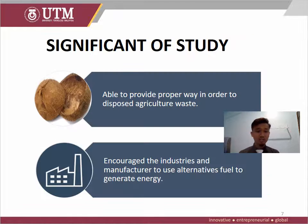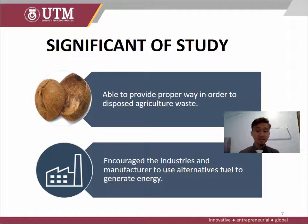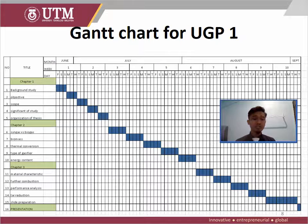There are two significant aspects of study developed by this project. First, to encourage manufacturers and plantations to provide a proper way to dispose of and utilize agriculture waste, especially coconut shell. Second, to encourage industry and manufacturers to use biomass as alternative fuel to generate energy instead of using oil and gas. This undergraduate project will take approximately 10 weeks, from June 2020 until 3rd September 2020.